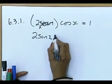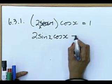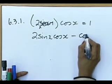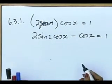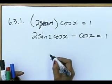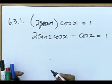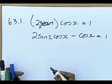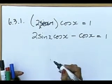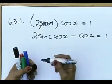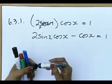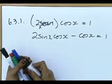2 sin x cos x minus cos x equals 1. And then I can take out a common factor. And somehow, you must try to end up with the two original questions. Once you are there, the answer will be in your face. And question 6.3.2.